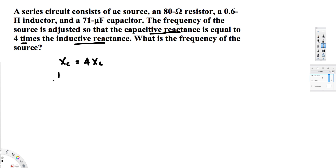We need to know that capacitive reactance is 1/(ωC) and inductive reactance is ωL. Since they have given that XC is adjusted to be four times the inductive reactance, we write: 1/(ωC) = 4·ωL.